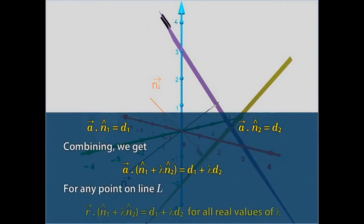For all real values of lambda, we get vector R dot cap n1 plus lambda cap n2 equals D1 plus lambda D2.